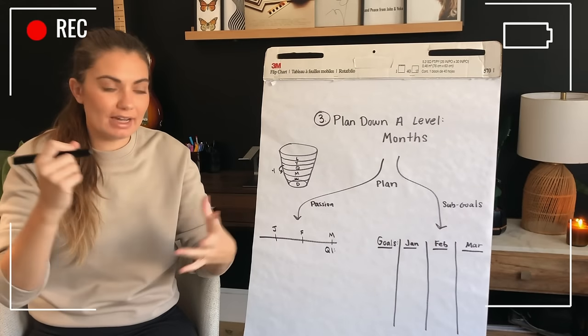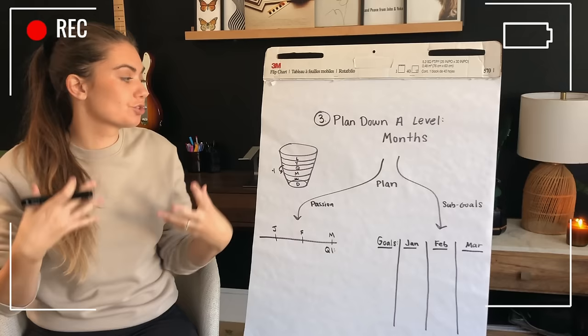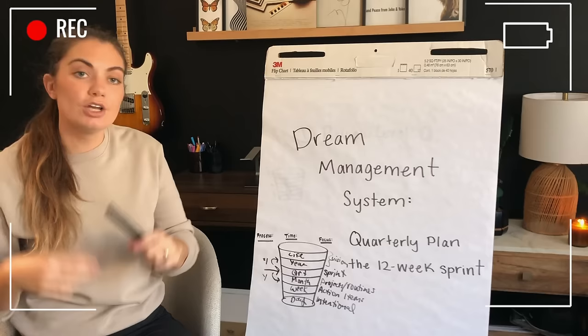This is where you'll get your pen out. This is where you'll actually get more to work. So we're going to actually plan on this level — that passion project and the sub goals. Under this flip chart, I've got three steps and we're going to go over all about how to design your 12-week sprint.